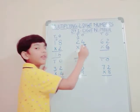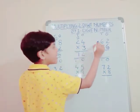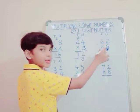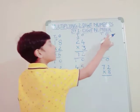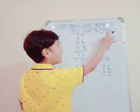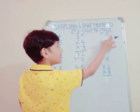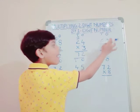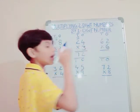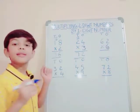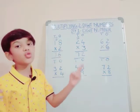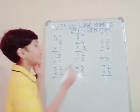Now our third sum: 62 into 6. First of all, we should multiply the 1's digit number by 6. That is 6×2=12.